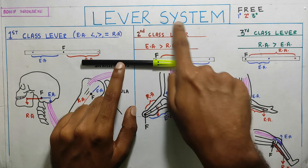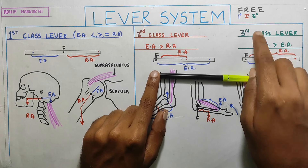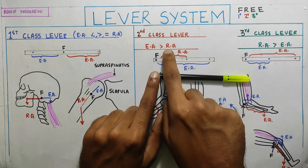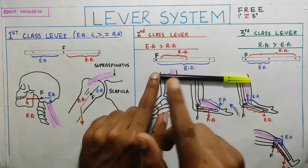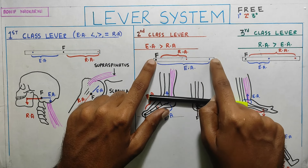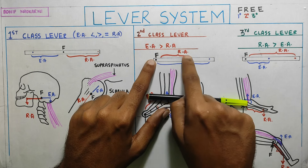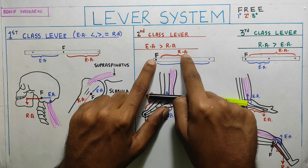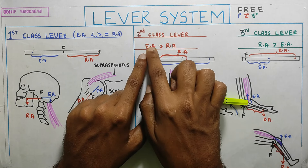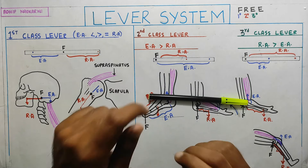In the second class lever system, the fulcrum shifts to one end and the resistance arm is in the middle. By logic, if the resistance arm is in the middle, the effort arm will be the longer one and the resistance arm will be the shorter one. So in second class levers, the effort arm is always greater than the resistance arm.